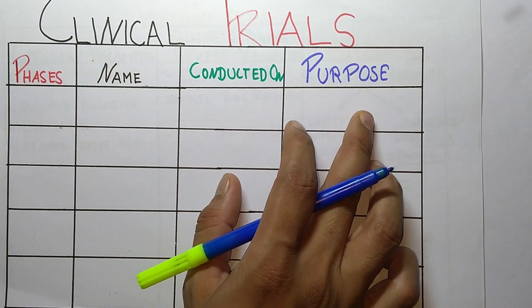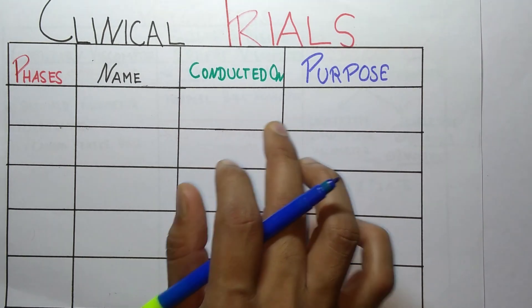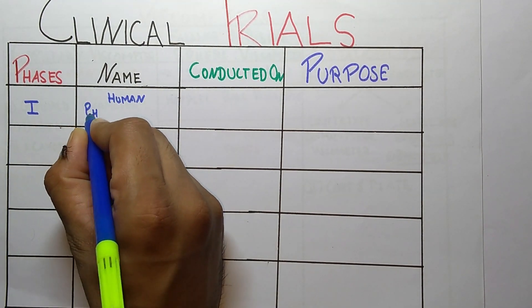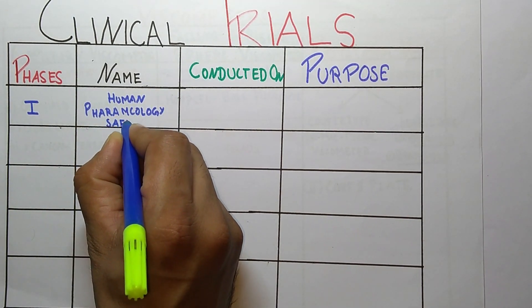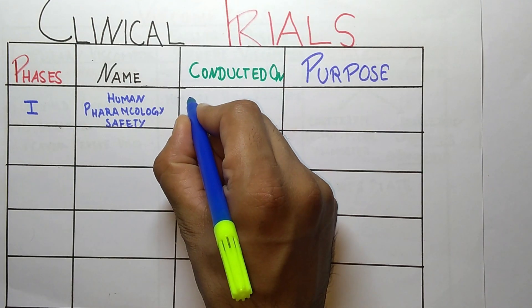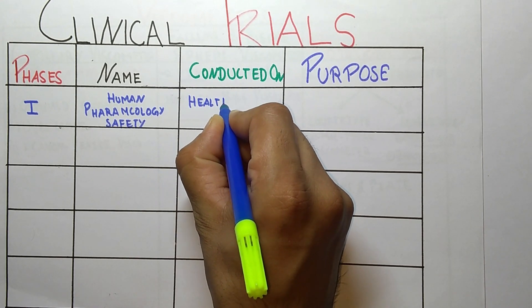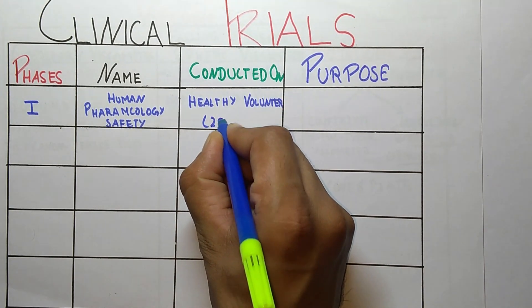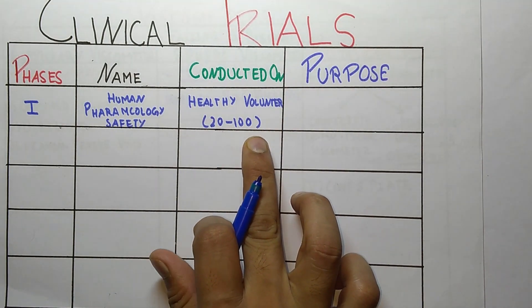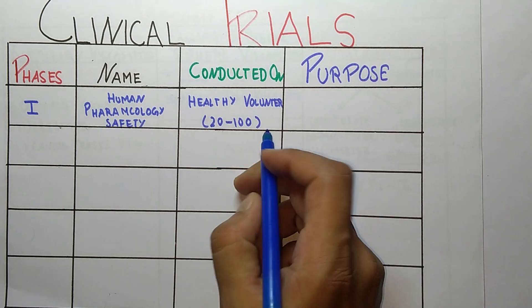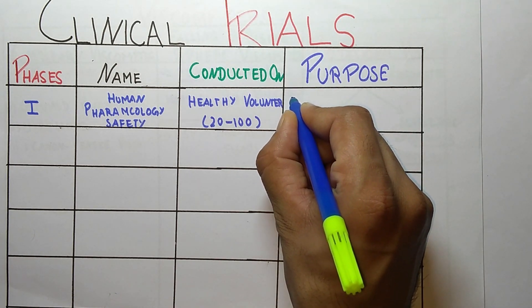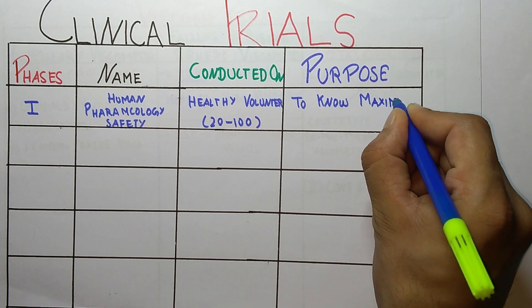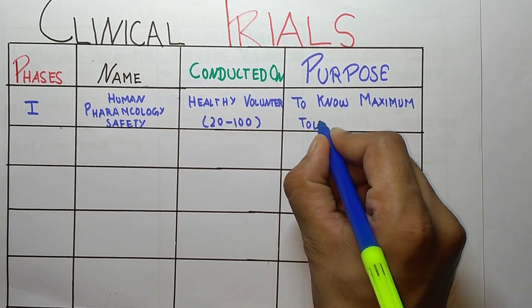The first phase is Human Pharmacology and Safety. It is conducted on healthy volunteers, and the number of healthy volunteers is 20 to 200. A question was asked in the 2018 exam about the number of healthy volunteers, so this is the answer. The purpose of this phase is to know the maximum tolerable effect.